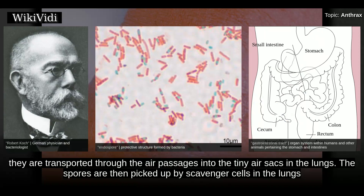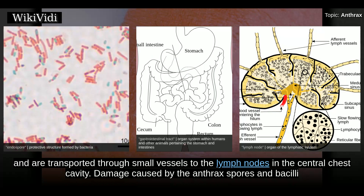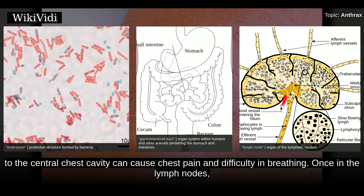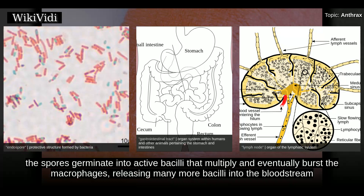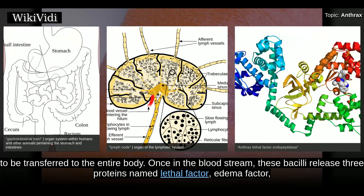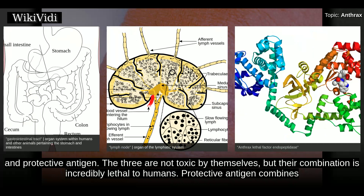They are transported through the air passages into the tiny air sacs in the lungs. The spores are then picked up by scavenger cells in the lungs and are transported through small vessels to the lymph nodes in the central chest cavity. Damage caused by the anthrax spores and bacilli to the central chest cavity can cause chest pain and difficulty in breathing. Once in the lymph nodes, the spores germinate into active bacilli that multiply and eventually burst the macrophages, releasing many more bacilli into the bloodstream to be transferred to the entire body. Once in the bloodstream, these bacilli release three proteins named lethal factor, edema factor, and protective antigen.